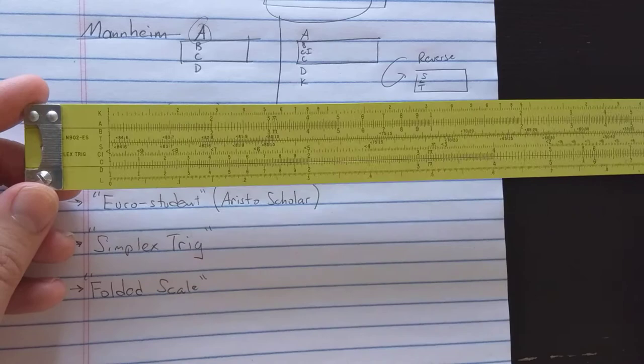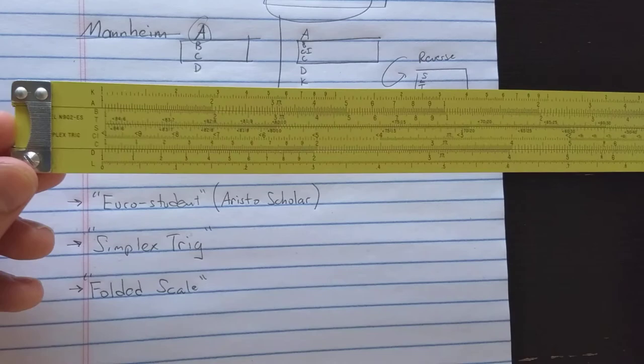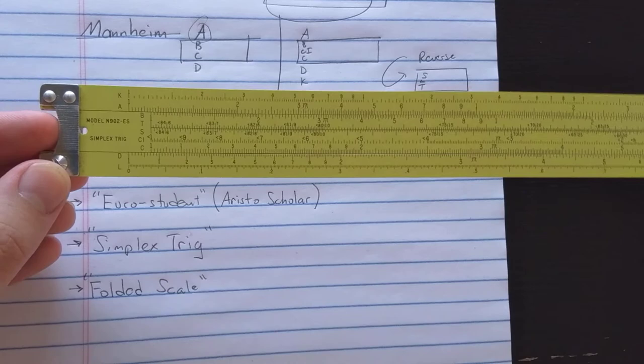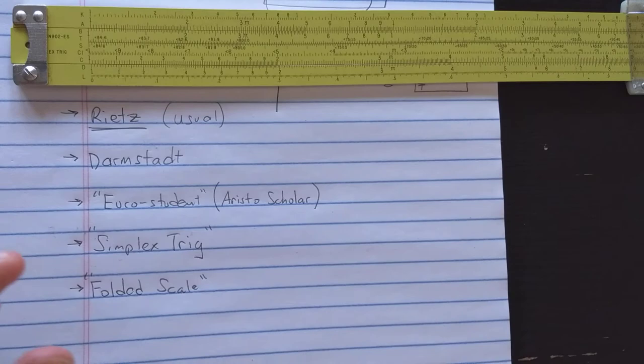Pickett makes it in a plastic version, the 120. I really just wish, you know, Hemi or some other manufacturer had made a slide roll with this layout. Maybe someone did that I don't know about, but I have never seen it.